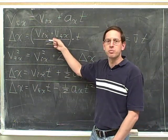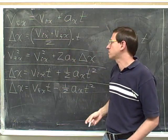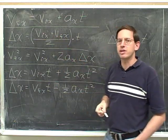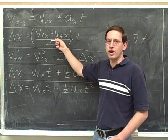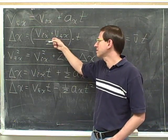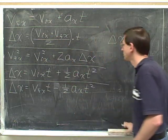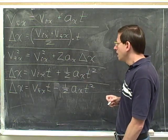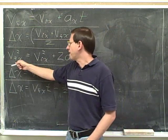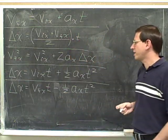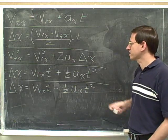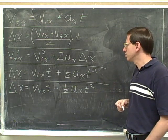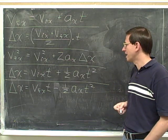When actually writing out the equation for solving problems, I recommend using the full expanded form rather than the condensed version. Our next equation: v final x squared equals v initial x squared plus 2 times a sub x times delta x. That is: v final x squared equals v initial x squared plus 2 times the x component of the acceleration times delta x.